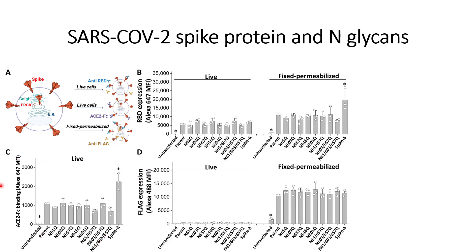Later on, they did the analysis of the whole spike protein on the cell surface. They can see that almost all mutants show a similar kind of expression, except spike-delta, which shows a very high amount of expression. This is because the expression of S1 is more compared to the other knockouts and also compared to the wild type.